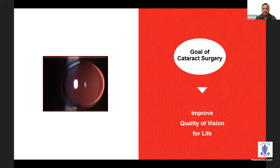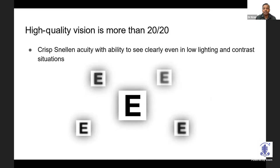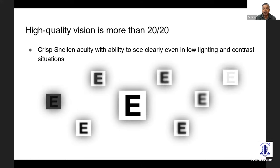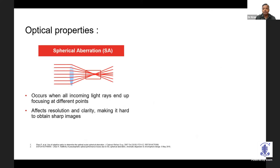Cataract surgery is the most common surgery we perform daily, and as eye surgeons we should know each and every aspect of an IOL before implanting it. The main goal of cataract surgery is to improve quality of vision for life — not just 20/20, but a continuous range of vision with good clarity and contrast in all lighting conditions, with good near and distance visual acuity.